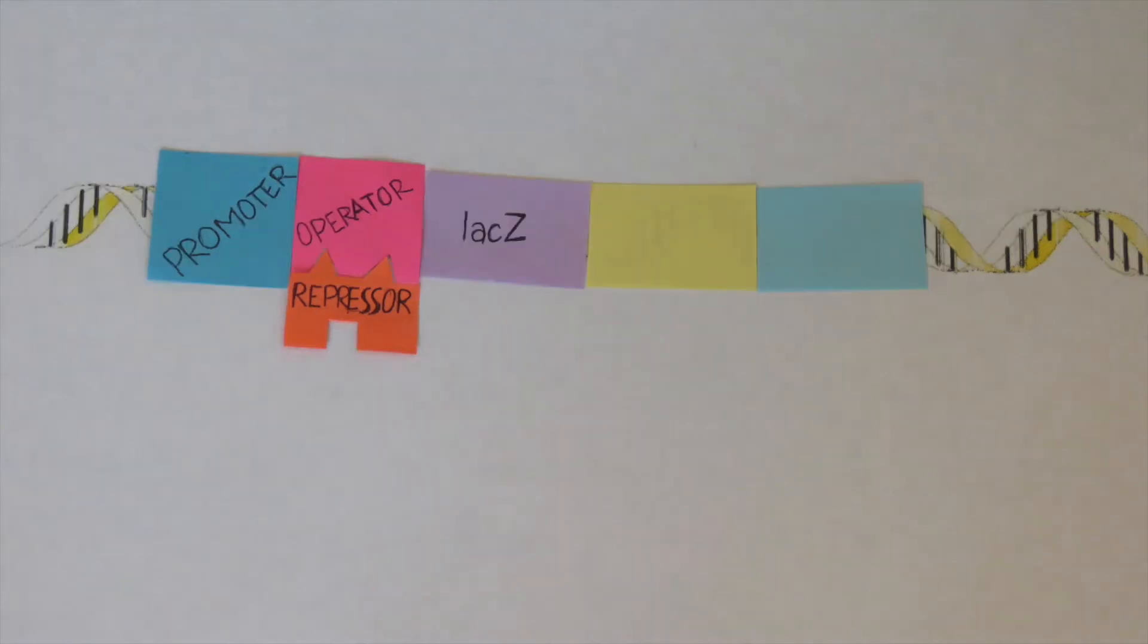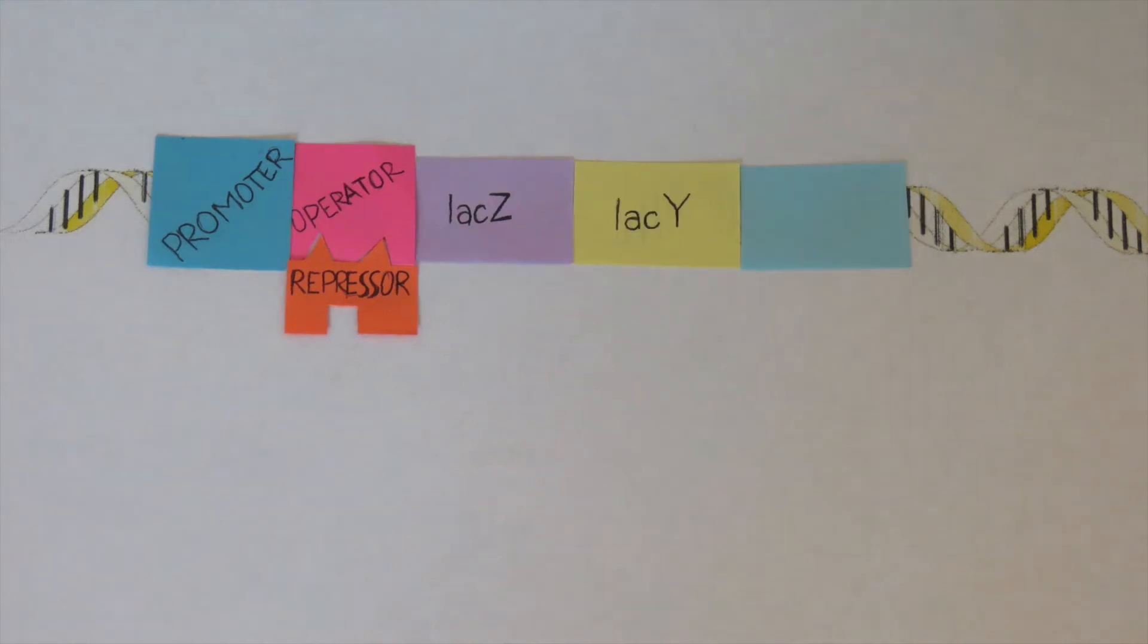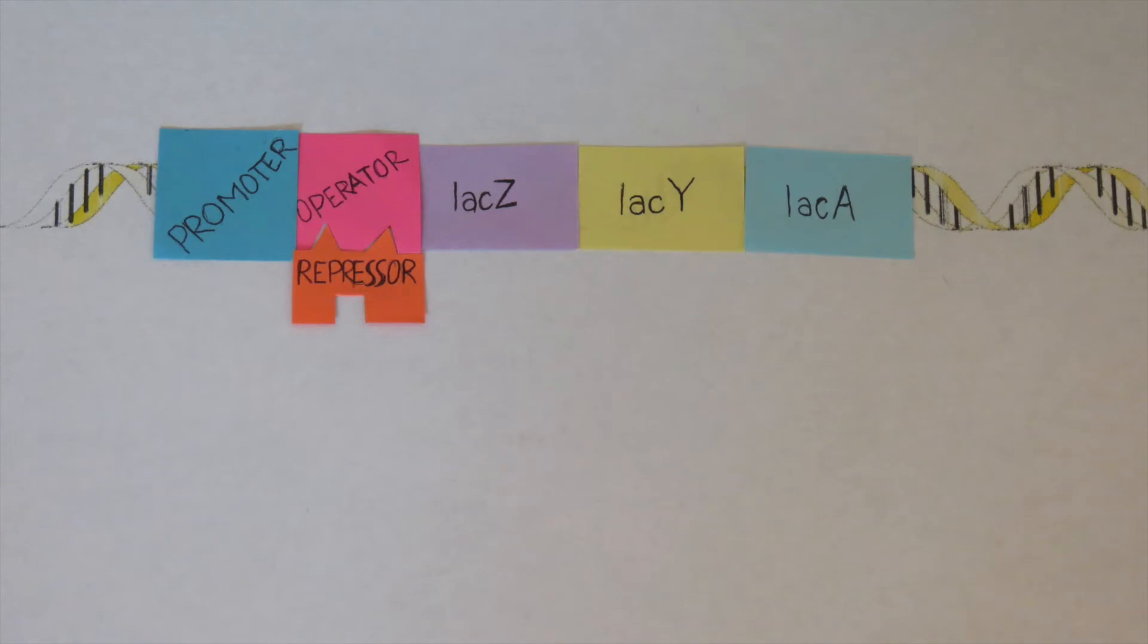Finally, since E. coli is a bacteria, the genes involved in this particular operon are all grouped next to each other on the DNA. These three genes that are involved in the lac operon are lacZ, lacY, and lacA.